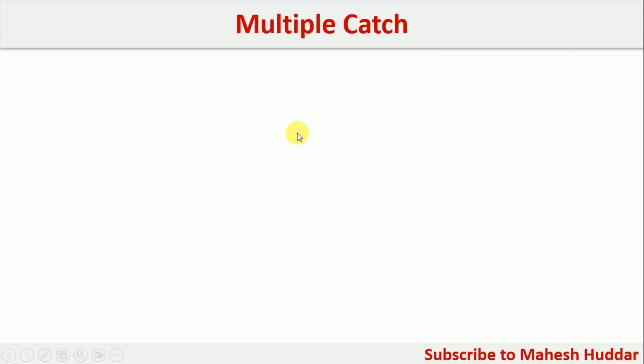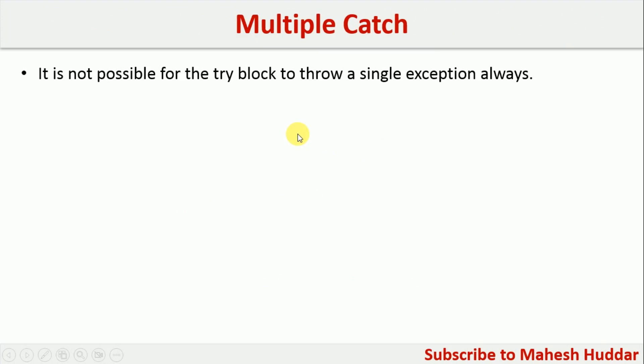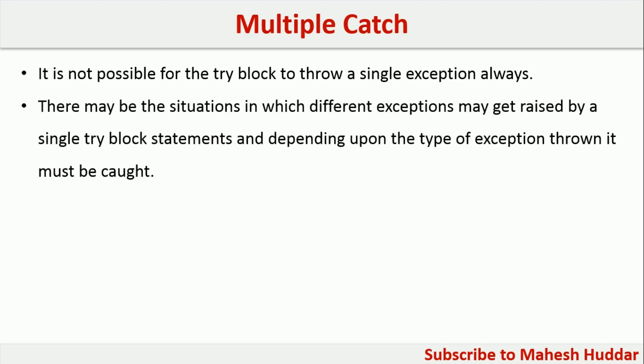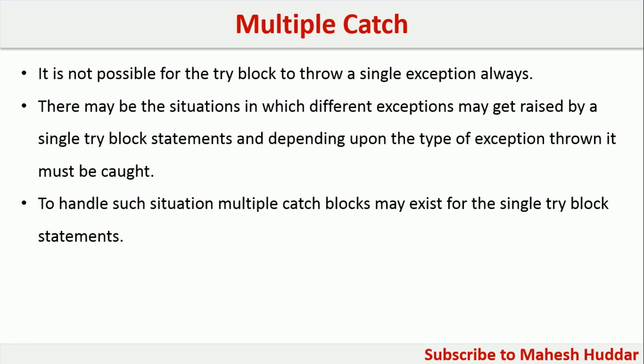Now there is a possibility that a particular try block may generate more than one exception. In the previous case it was generating only an arithmetic exception, but in reality we cannot say that a try block will generate only one exception — it may generate more than one. So what we can do is for each of those exceptions, we can have a separate catch block. For example, if a try block generates an arithmetic exception as well as an illegal access exception, we should have two associated catch blocks — one for arithmetic exception and another for illegal access exception. Or if there is also an array index out of bounds exception, we should have one more catch block.